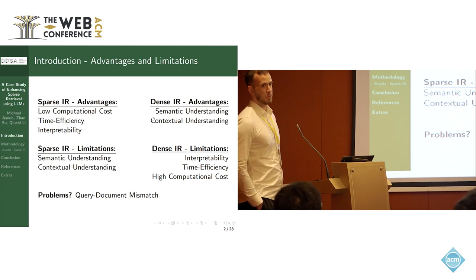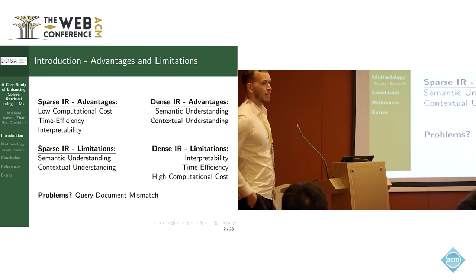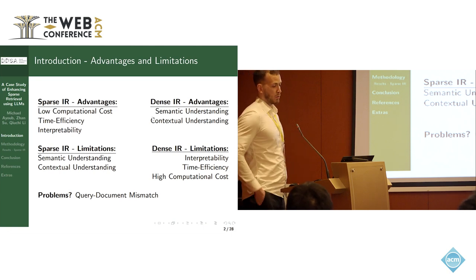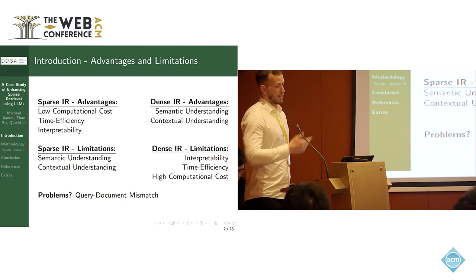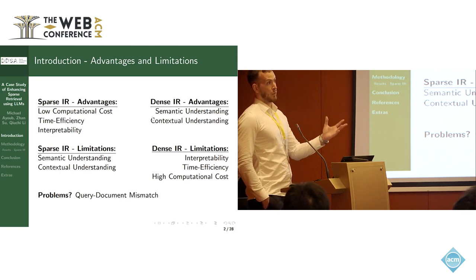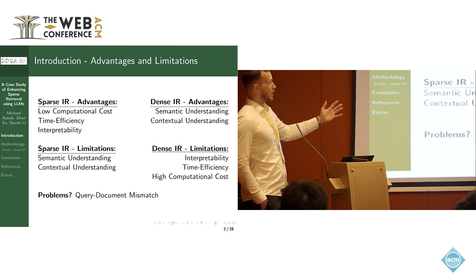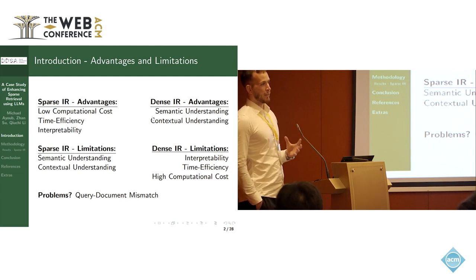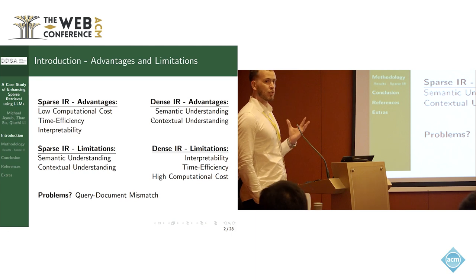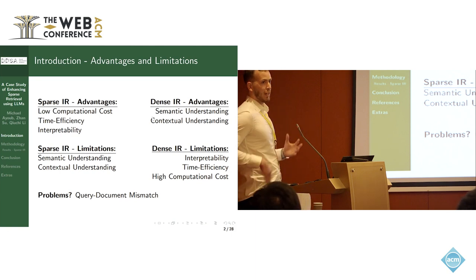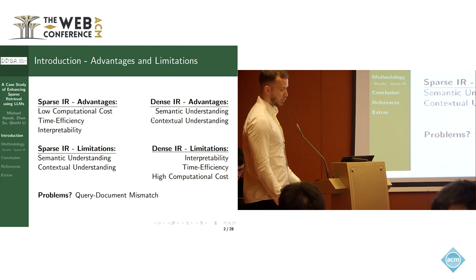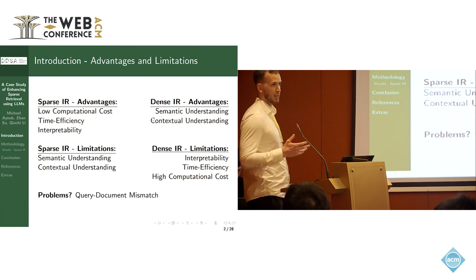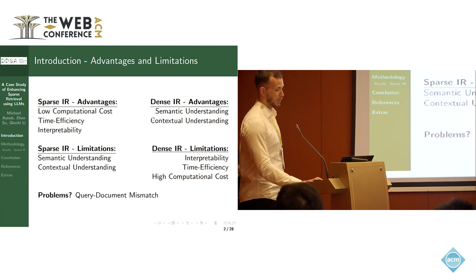Dense information retrieval has tried to solve this issue by transforming text into dense vector representations, having these continuous vector representations which allow for better semantic and contextual understanding. But it also has the limitation that we have to conduct a lengthy and computationally costly supervised phase, which can be a limitation in a real-world setting. So dense IR comes with high computational cost and also has, to some extent, a poor degree of interpretability.